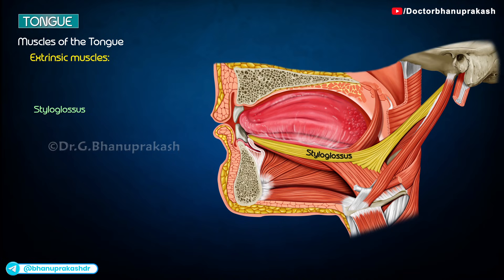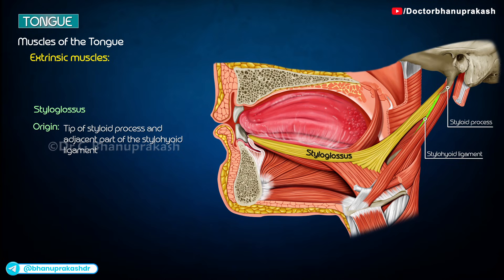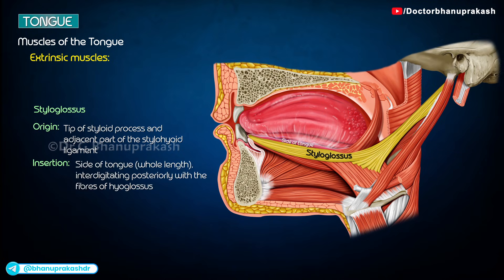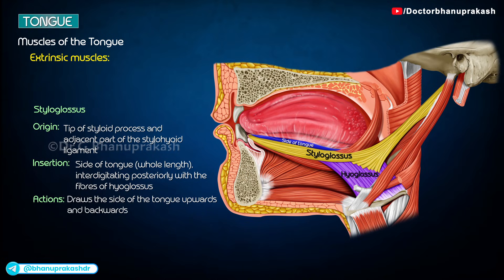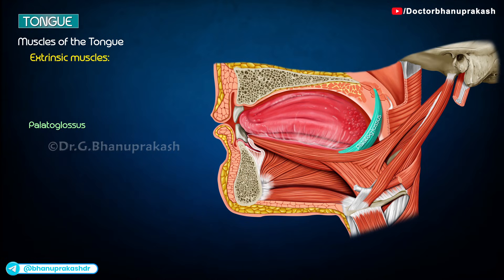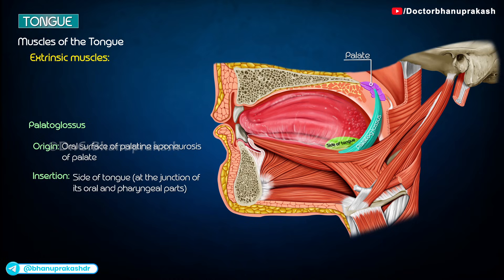Styloglossus originates from the tip of the styloid process and adjacent part of the stylohyoid ligament. It inserts into the side of the tongue along its entire length, interdigitating posteriorly with the fibers of hyoglossus. The muscle draws the side of the tongue upwards and backwards. Palatoglossus is a slender slip of muscle originating from the oral surface of the palatine aponeurosis; it inserts onto the side of the tongue at the junction of its oral and pharyngeal parts, elevating the root of the tongue and approximating the palatoglossal arches.